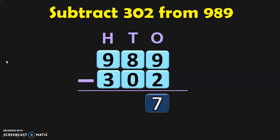Next, move on to the tens place where we have eight minus zero. This is the property of subtraction — or the property of zero: when you subtract zero from a number, you get the same number. So eight minus zero gives you eight.